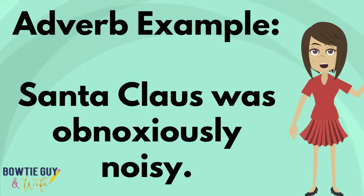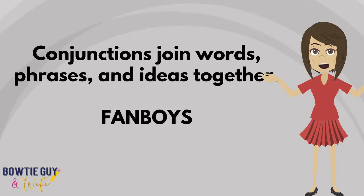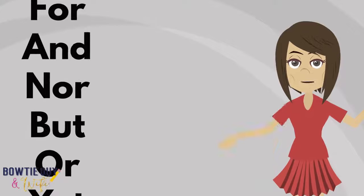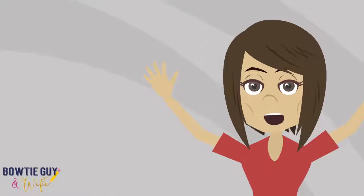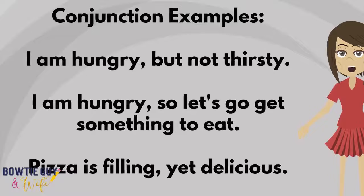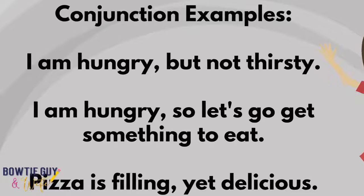What are conjunctions? Conjunctions join words, phrases, and ideas together. There's a neat little acronym that I use to help me remember what conjunctions are, and they are FANBOYS. FANBOYS stands for the words for, and, nor, but, or, yet, and so. Those are the fanboys you need to know. Conjunctions are found in compound, complex, and compound-complex sentences. Examples: I'm hungry, but not thirsty. I'm hungry, so let's go get something to eat. Pizza is filling, yet delicious.